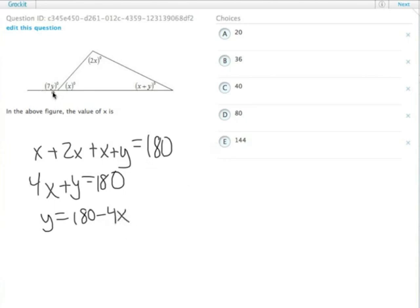We also have another equation, the angles in a straight line add up to 180. So we know that 7y plus x here, these two angles are complementary, they both add up to 180. So 7y plus x also equals 180.